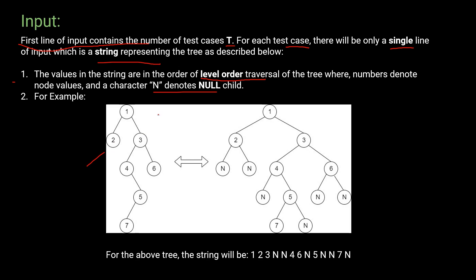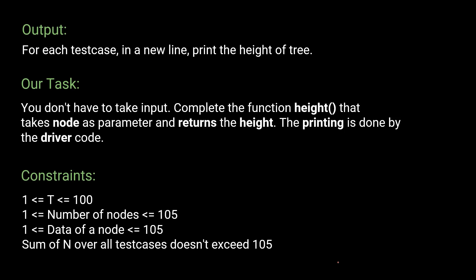For example, given a tree with nodes 1, 2, 3, we can add null children as needed. Traversing the example tree level by level, the string would be: 1 2 3 N 4 6 N 5 N N 7 N.